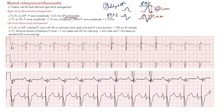For left atrial enlargement in the inferior leads, we want to see notched P waves — the M mitrale pattern. Mitral valve disorders can cause this. The duration should be prolonged, at least 120 milliseconds (over 110 ms is sufficient — hitting three small boxes). The two peaks of the notched P wave should be at least 40 milliseconds, or one small box, apart.